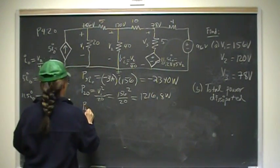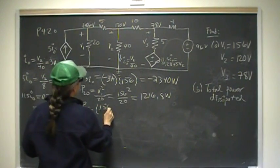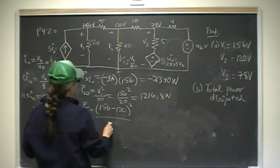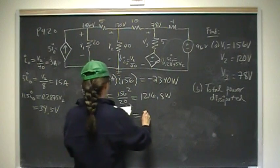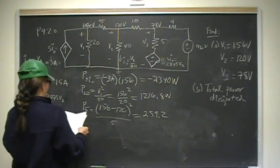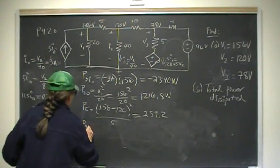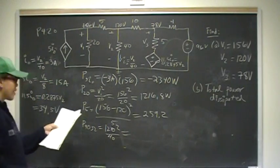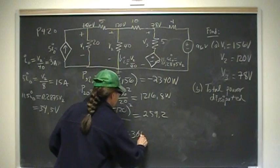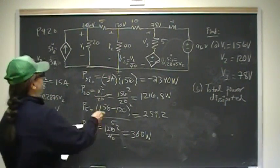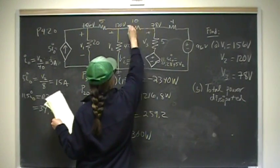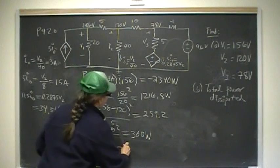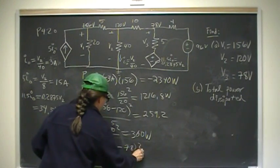The 5 ohm resistor between V1 and V2: P = (V1 − V2)² over 5 = (156 − 120)² over 5 = 259.2 watts. The 40 ohm resistor: P = V2² over 40 = 120² over 40 = 360 watts. The 10 ohm resistor: P = (V2 − V3)² over 10 = (120 − 78)² over 10 = 176.4 watts.